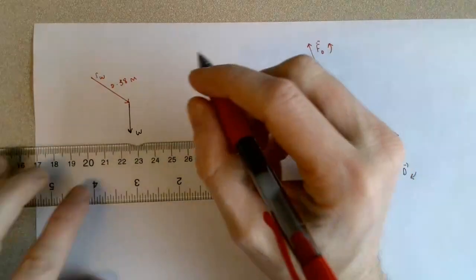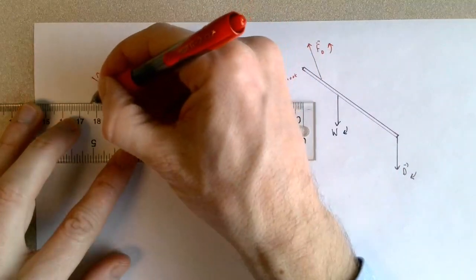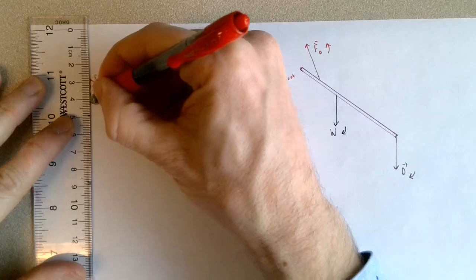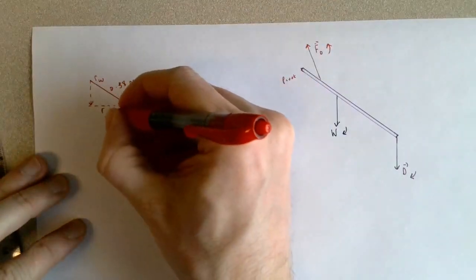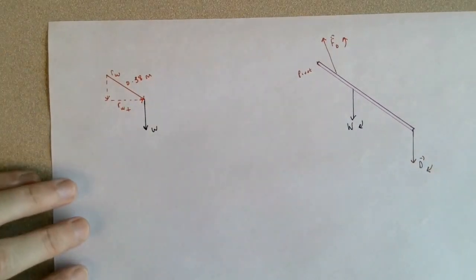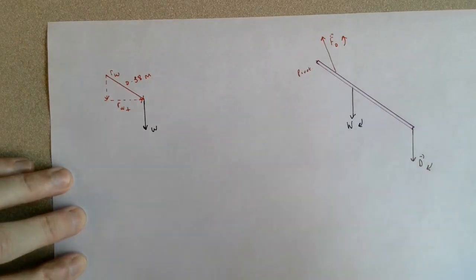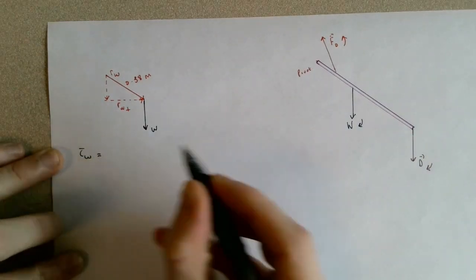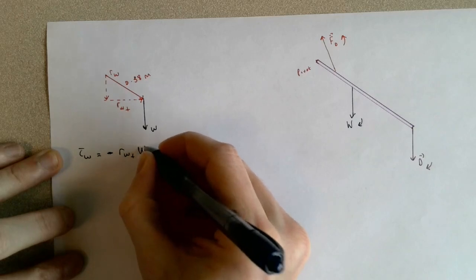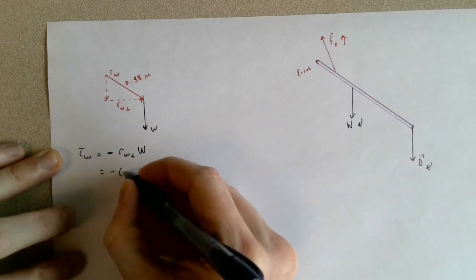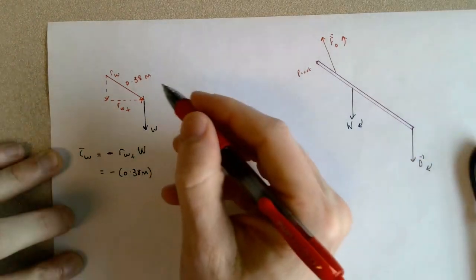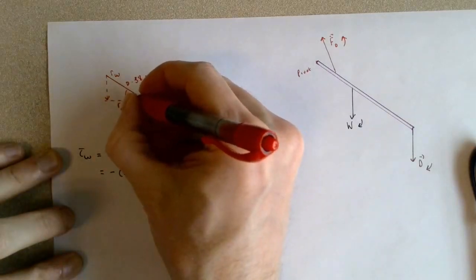Now I would prefer here to decompose the R vector into two components rather than decomposing the weight force vector. So this piece here is Rw perpendicular. In this example, to find the torque due to the weight, it is negative, it's a clockwise torque. So it's going to be negative Rw perpendicular times the weight itself. That's negative 0.38 meters. Just to add in the details here, I know this angle in here is 30 degrees.